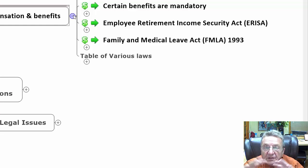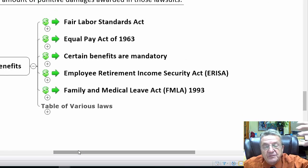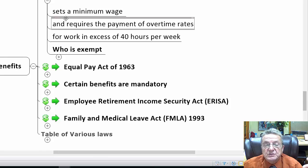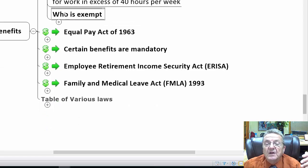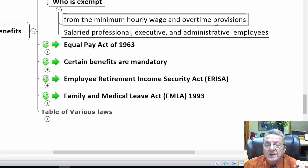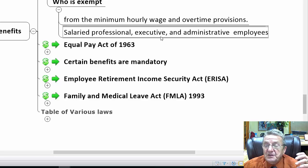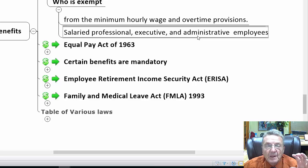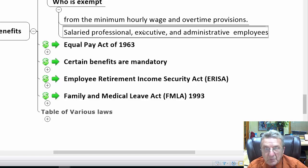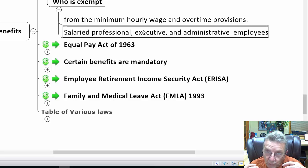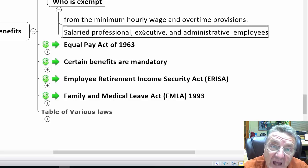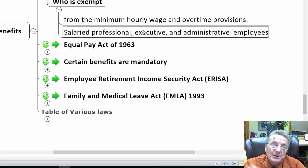On compensation and benefits: the Fair Labor Standards Act sets a minimum wage and requires payment of overtime rates for work in excess of 40 hours. Who is exempt from minimum hourly wages and overtime? Salaried professionals, executives, and administrative employees. Sometimes when you have an administrative employee in a salary position, the company tries to play games — treating them as salary so they don't have to pay overtime. As a salaried professional, I might expect to work maybe 10 hours over 40, perhaps up to 50 hours — that's part of my base salary compensation.